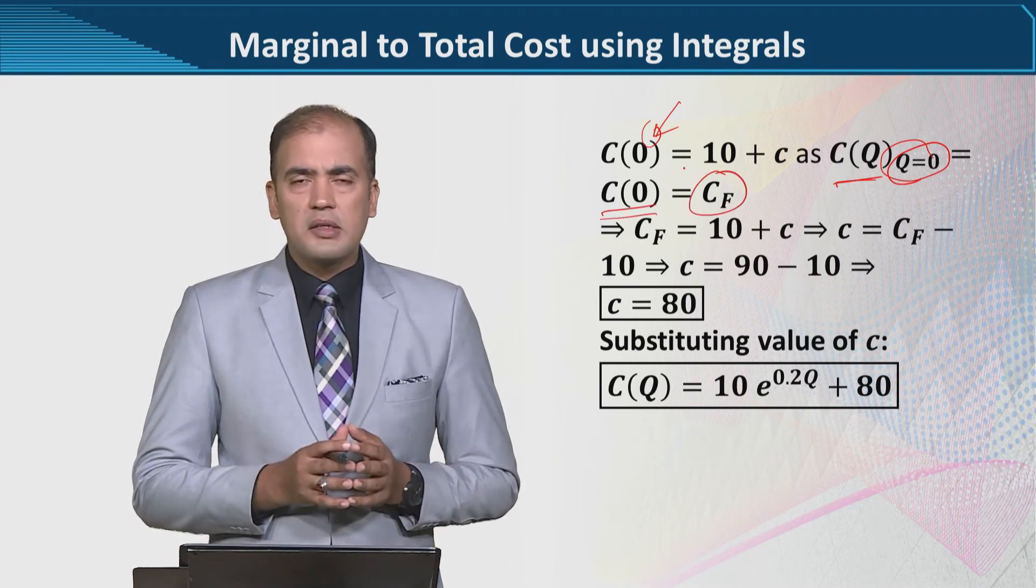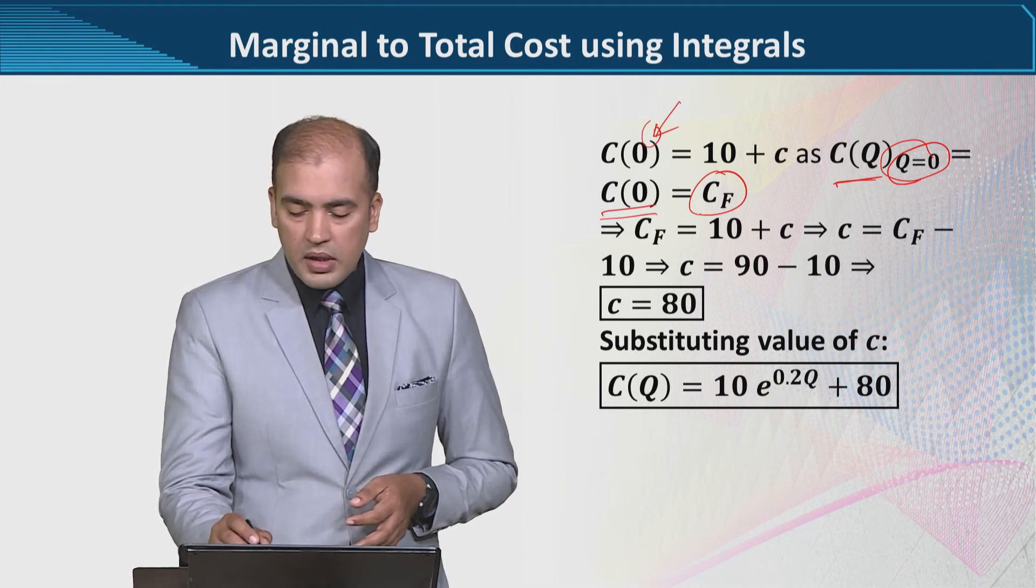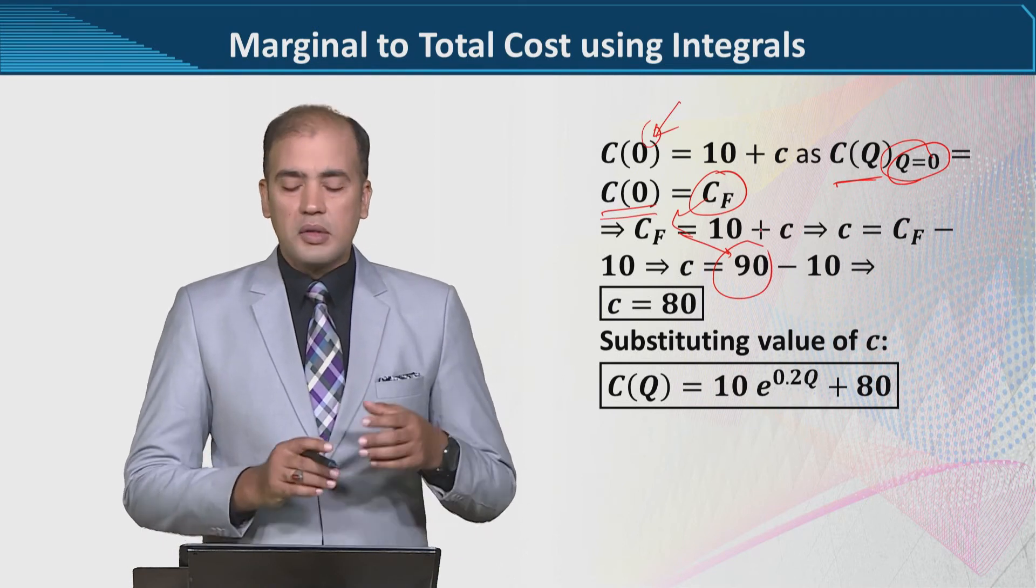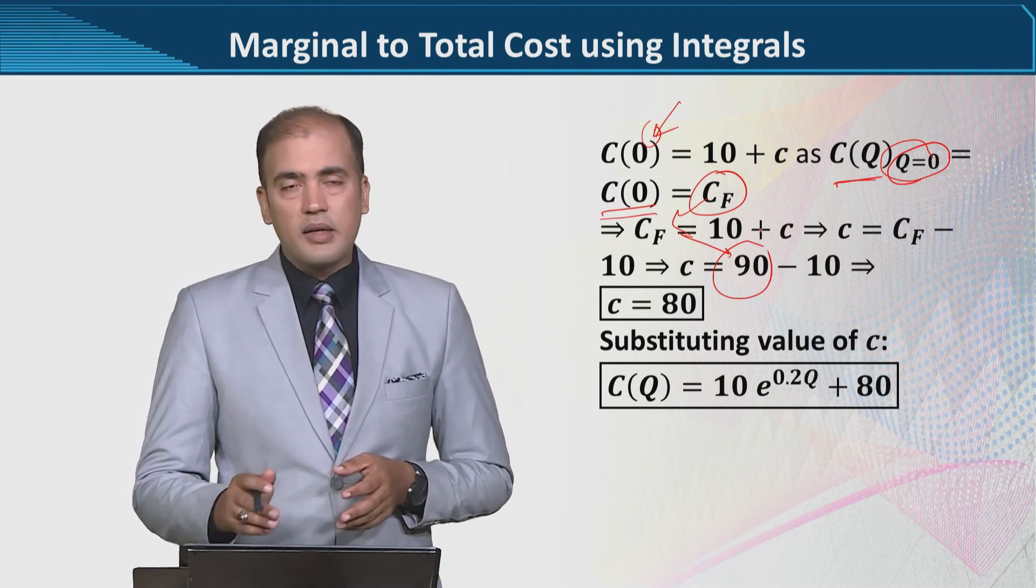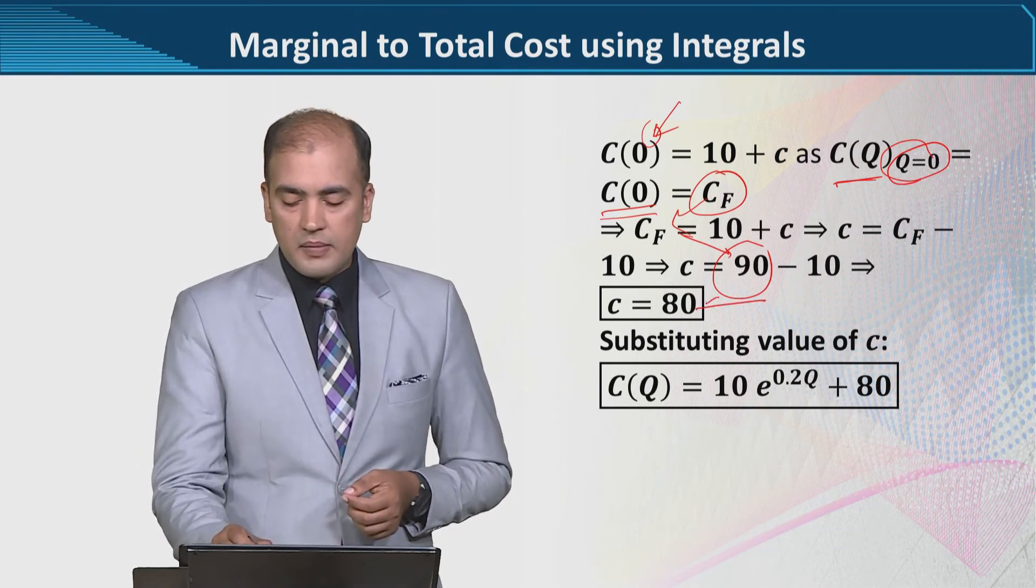So, we can do that. This is the fixed cost, which we can see, we can substitute it. So, CF minus 10, which is 80.